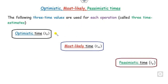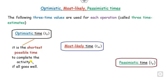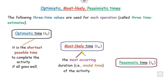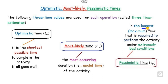Whenever we talk about PERT analysis, we discuss three time estimates because the time is uncertain. The first one is called the optimistic time (T0): the shortest possible time to complete the activity if everything goes well — the minimum time needed. The second is the most likely time (Tm): the most frequently occurring duration of the activity. The third is the pessimistic time (Tp): the maximum time, or the longest time required to perform the activity under extremely bad conditions.